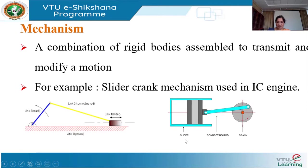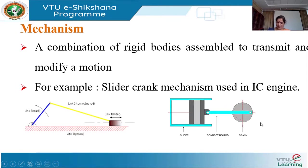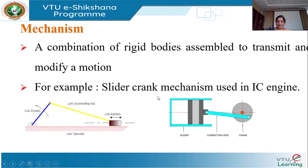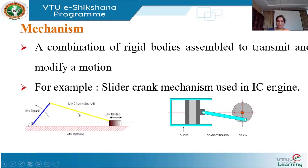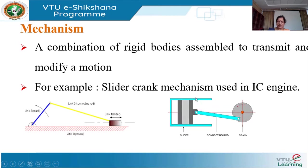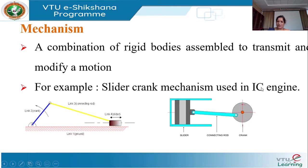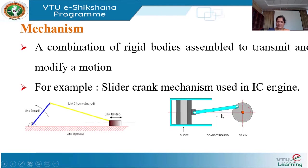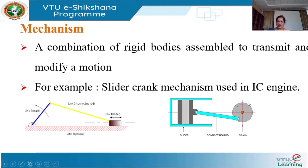But in the slider crank mechanism, we are using it to obtain useful work. This mechanism converts the reciprocating motion of a piston into a rotary motion of the crank — it transmits and modifies the motion.